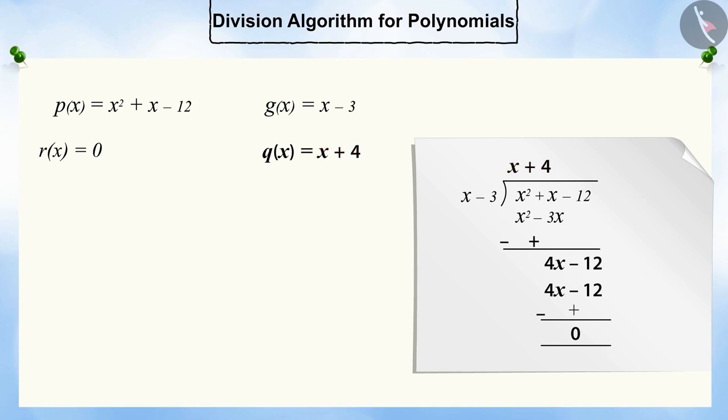In this way, we can divide one polynomial with another polynomial. But this is possible only when the degree of the dividend is greater than or equal to the degree of the divisor and the divisor is not 0.